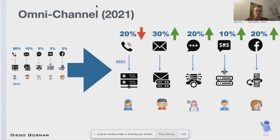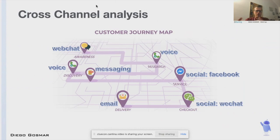We are now used to getting in touch with customer service by using social media, messaging, web chat, and even video collaboration. Omni-channel capability is one of the key contact center trends. It allows us to perform cross-channel analysis and customer journey analysis to have a better idea about what the customer is doing with the contact center.